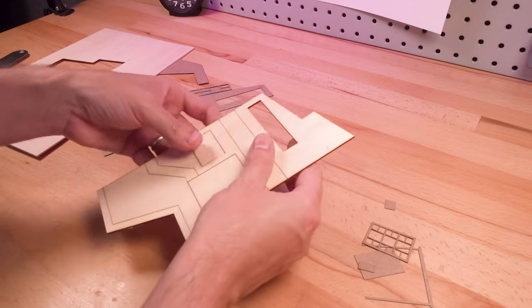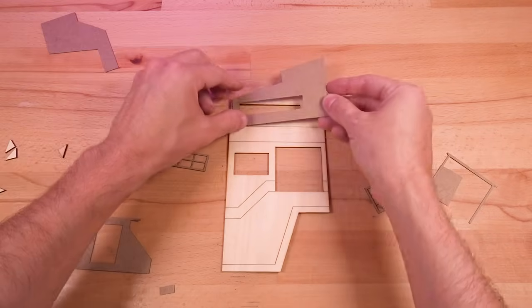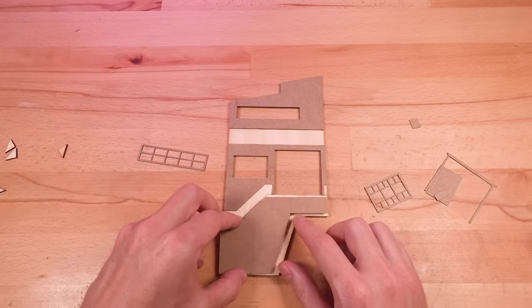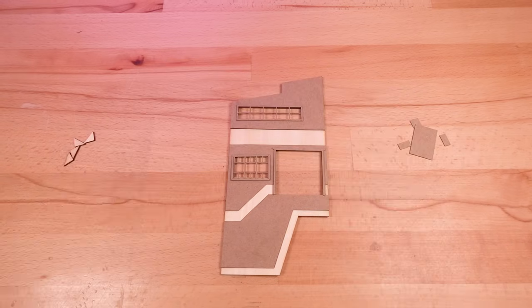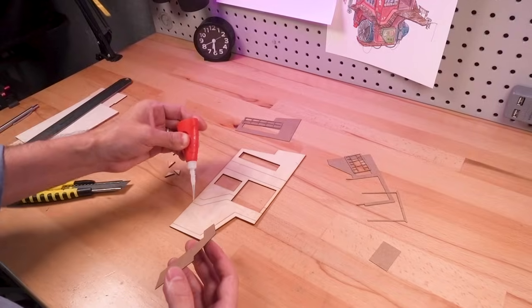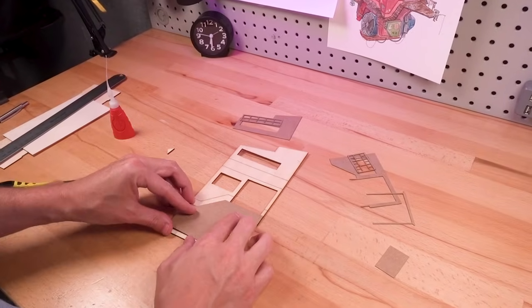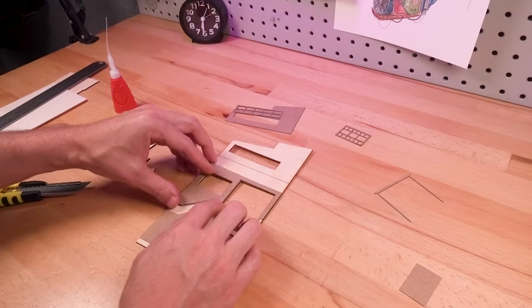With the pieces cut and ready to go, I dry-fit everything together just to double-check my work. I then superglued the panels, made from 1mm chipboard, to the wood, which is 2mm basswood.